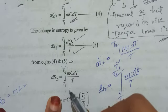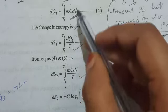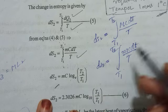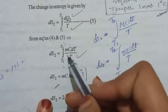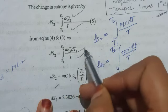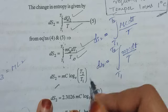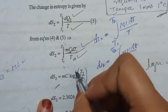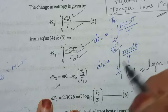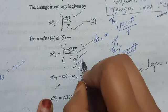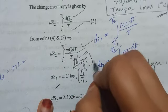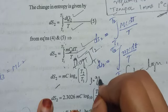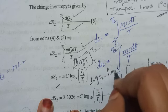From equations 4 and 5, substituting the dQ2 value, we get dS2 equals integral of mC dT by T. The integration of 1 by x gives log x. Same way, integration of 1 by T gives log T. With limits T1 and T2, we get upper limit minus lower limit, so log T2 minus log T1, which equals log T2 by T1.